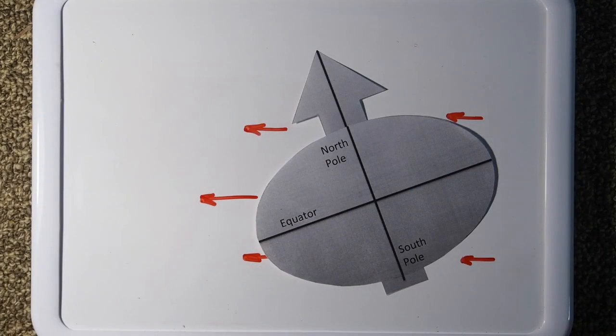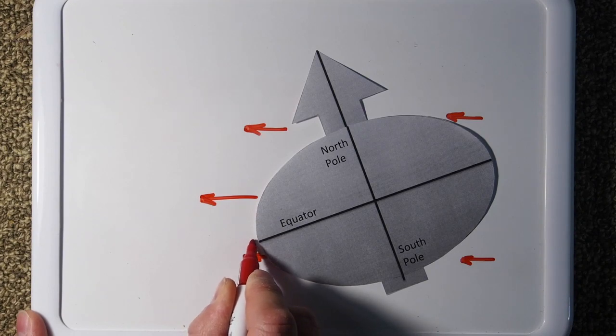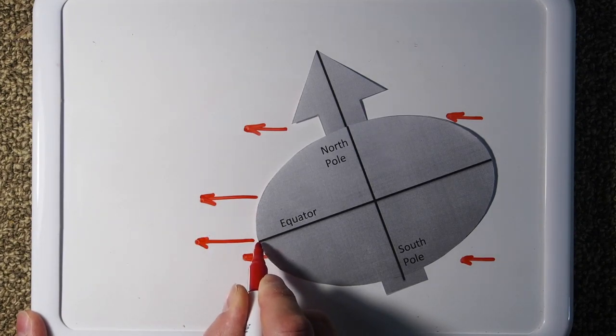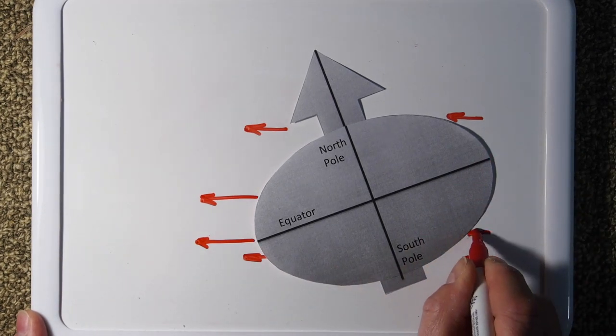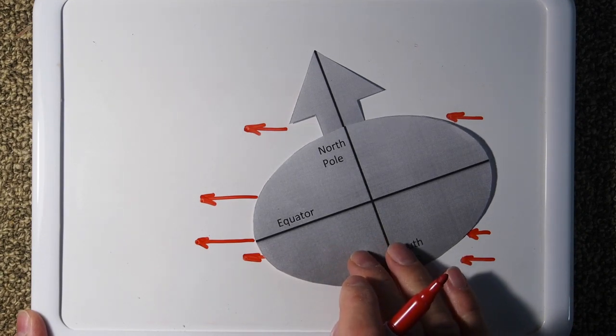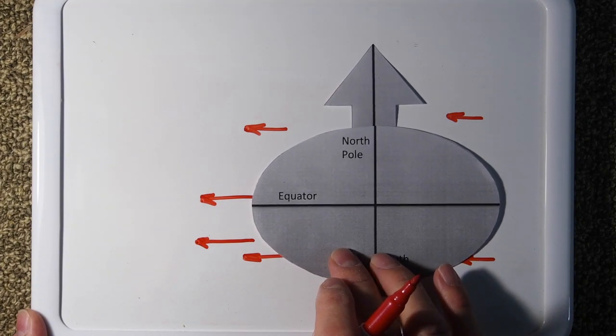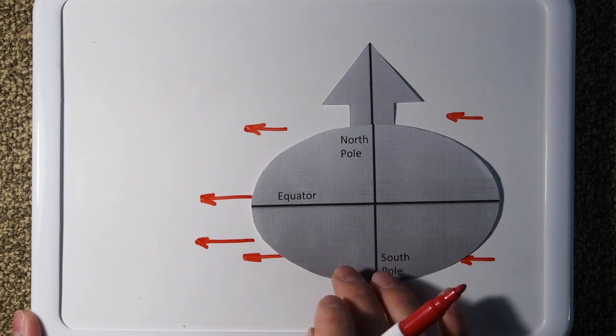And what the bulge does is that the gravity can tug a little bit harder on the side closer to the Sun than on the side further away from the Sun. So this force is a little smaller than this one. And what that does, the gravity will try to pull the Earth kind of perpendicular to its direction, this way.